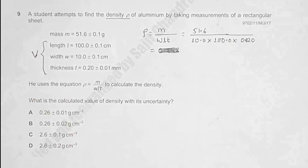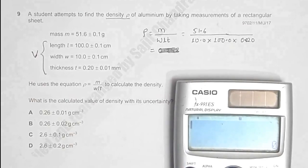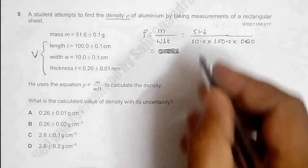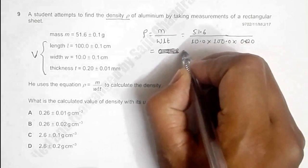If I do the calculations, the value of the density will be 51.6 divided by 10 × 100 × 0.02. The value comes to be